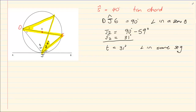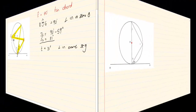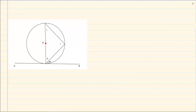So you have that S is 40 degrees, T is 31 degrees, and you have seen the entire rider. Let us take the following rider.